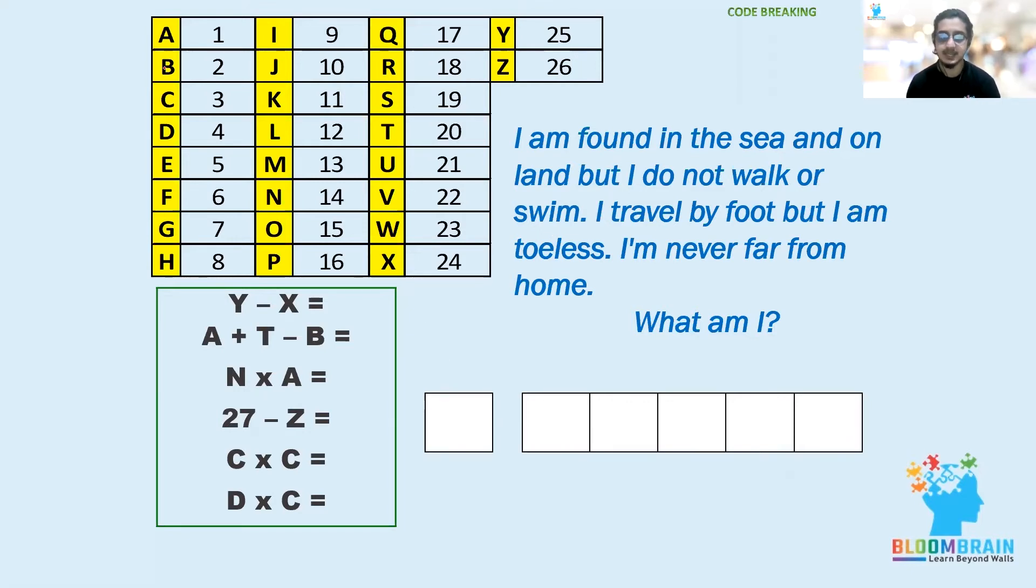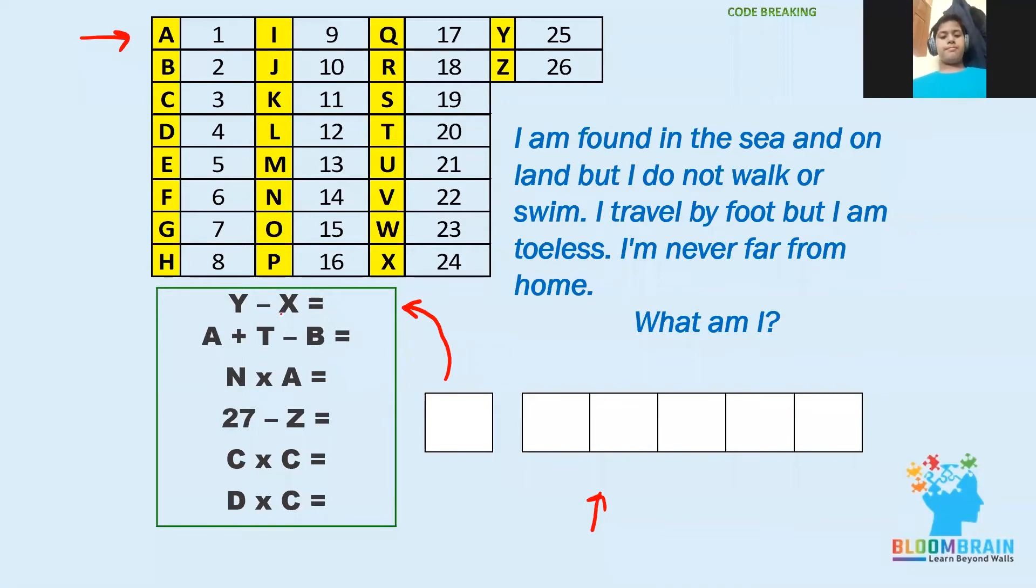Here you have a code given: A is for 1, B for 2, and Z for 26. All the codes are given. The answer will be in letter form. For the first box, the equation is Y minus X. Y is 25 and X is 24, so 25 minus 24 equals 1, so 1 is A.